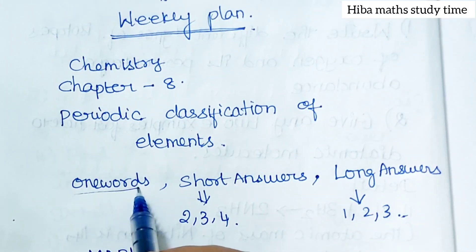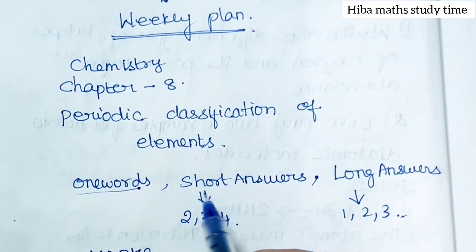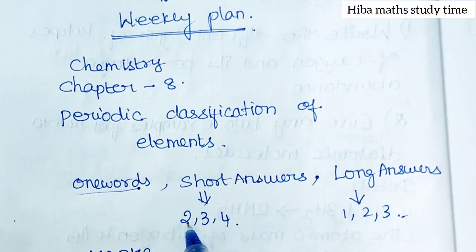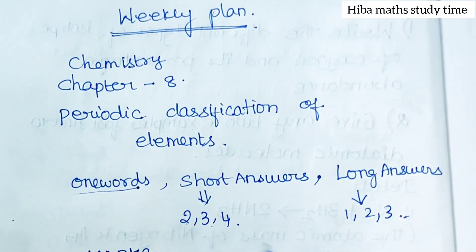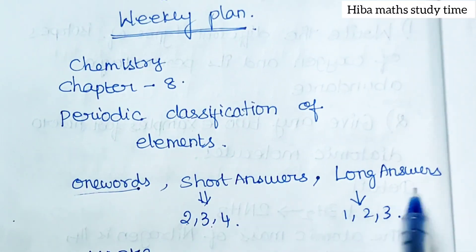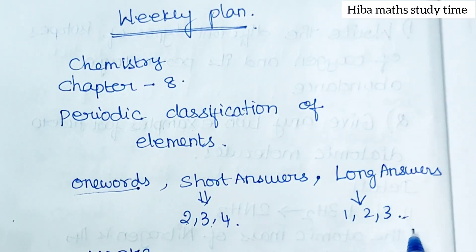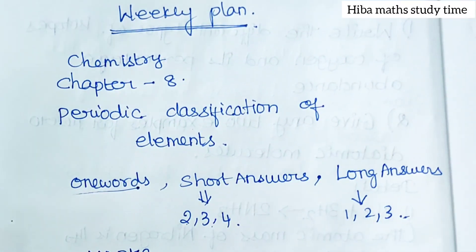One-word answers — you will complete it. Short answers: 2, 3, 4 — important. Long answers: 1, 2, 3 — important.